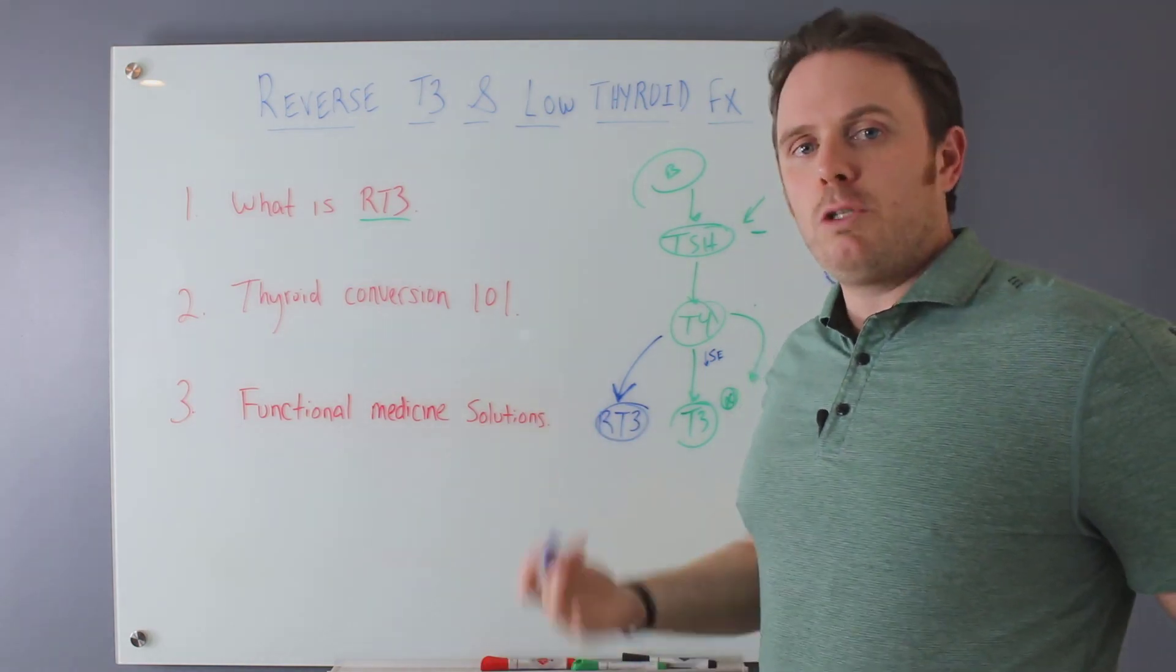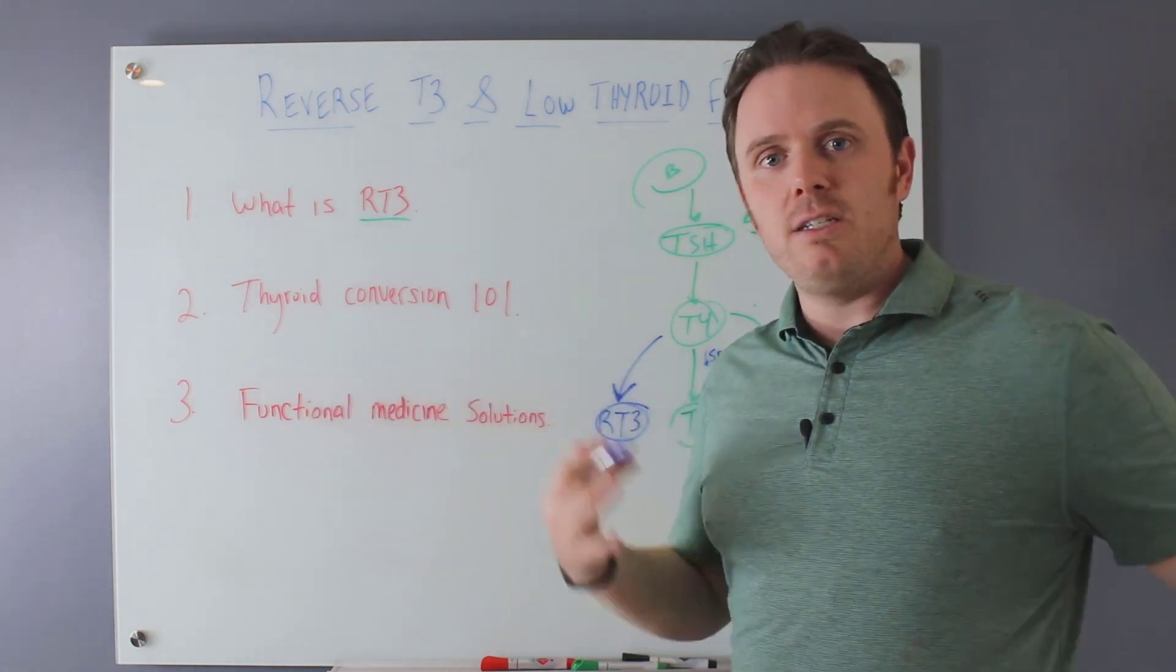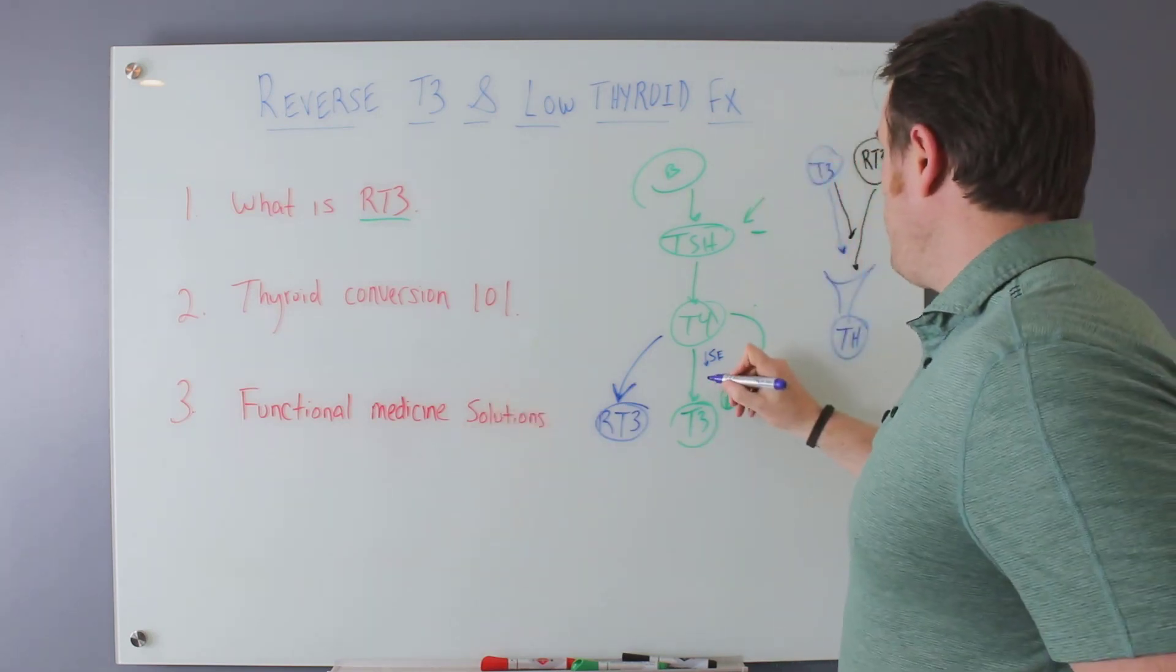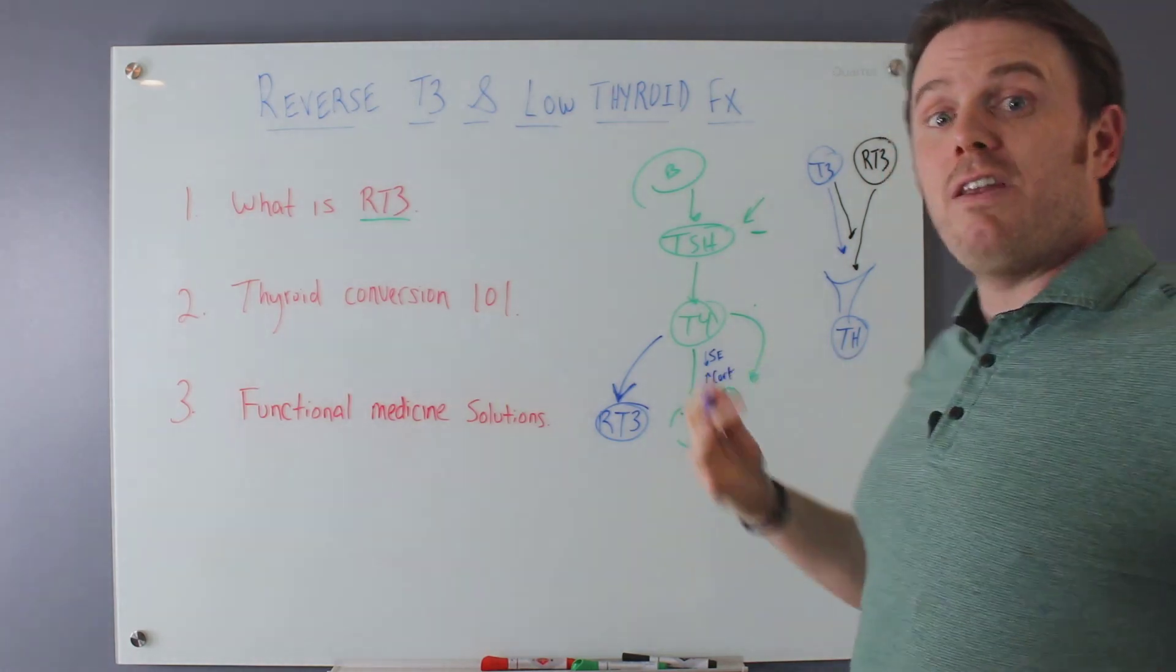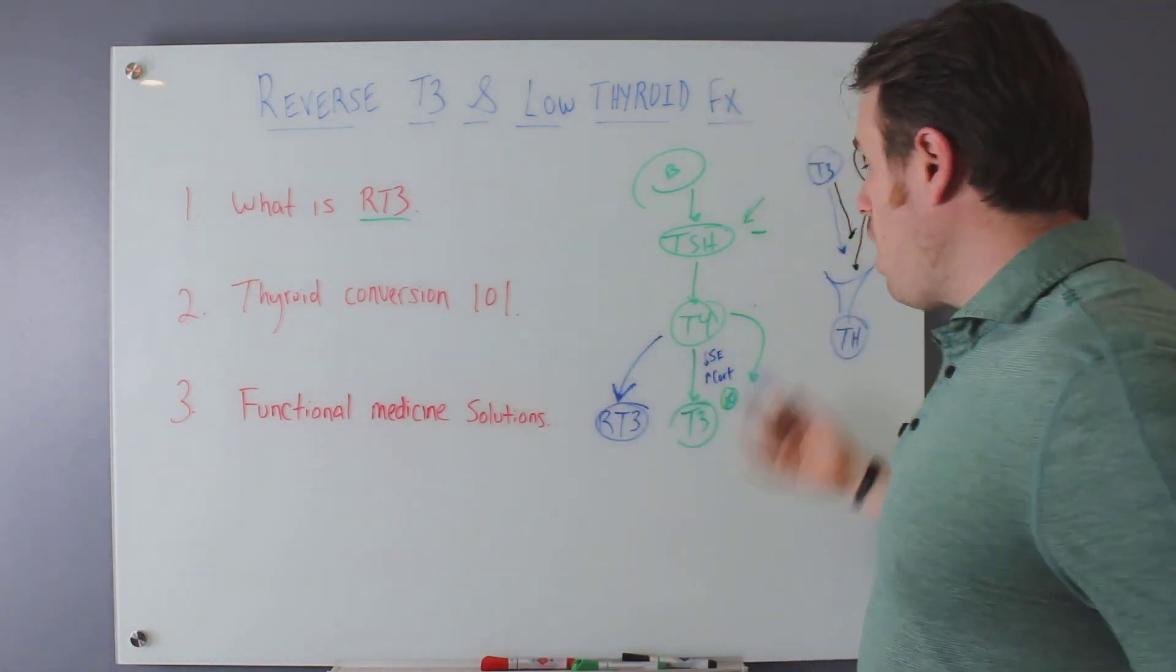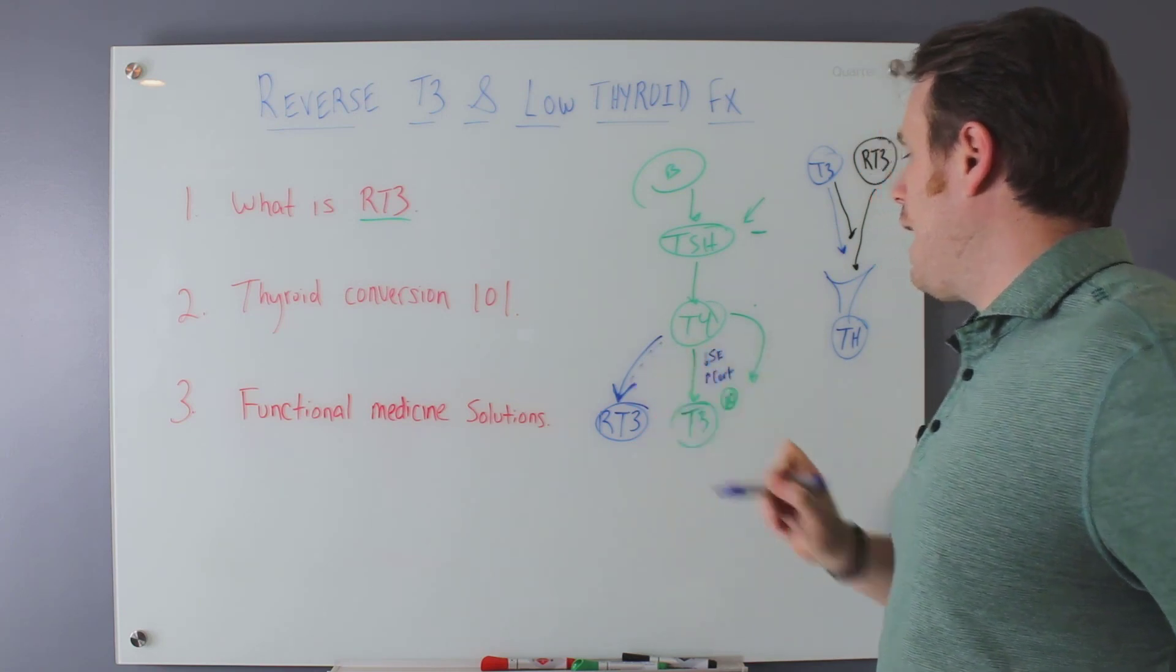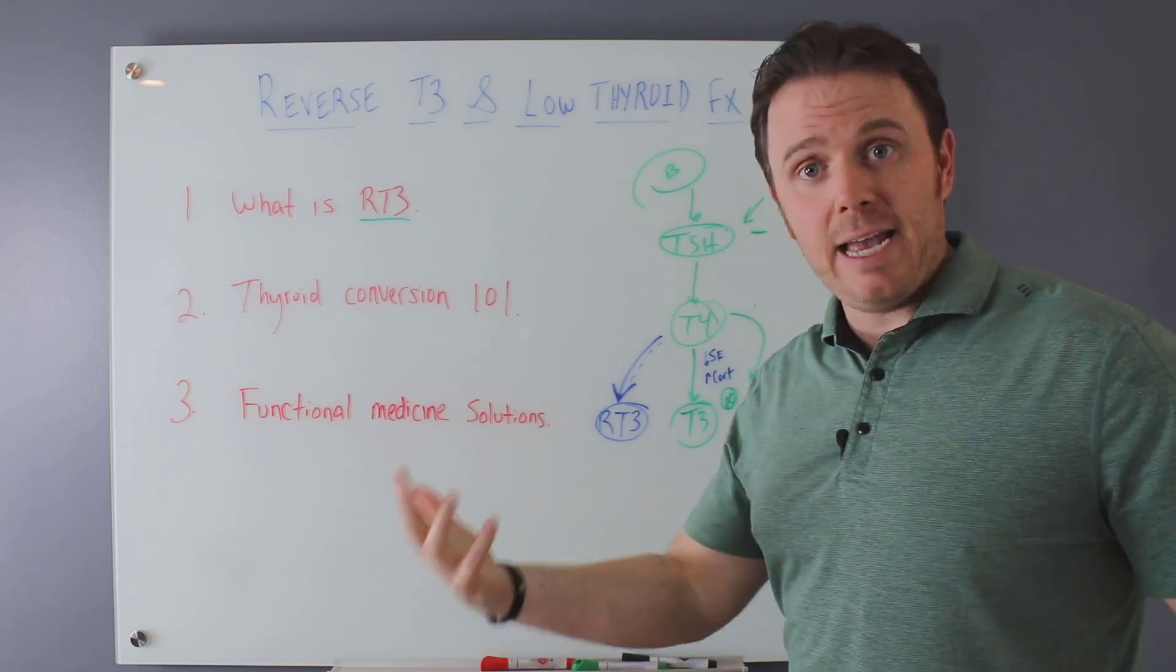Liver stress is important because the enzymes that upregulate the five prime deiodinase come from the liver. Liver stress can be a big thing. So we'll give milk thistle, we'll support healthy liver function. Of course, just decreasing toxins and stress helps. Any kind of adrenal stress. So if we have increased cortisol, or even very low cortisol, chronic stress can cause more reverse T3 to happen. So we have cortisol, aka stress.